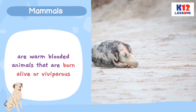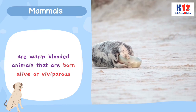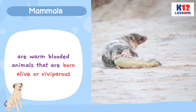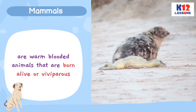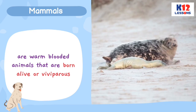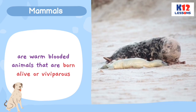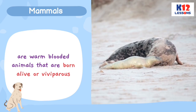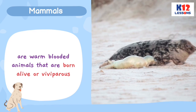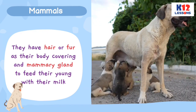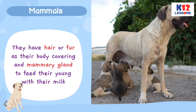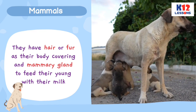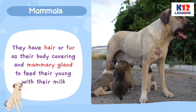Mammals are warm-blooded animals that are born alive, or viviparous. They have hair or fur as their body covering, and mammary glands to feed their young with their milk.